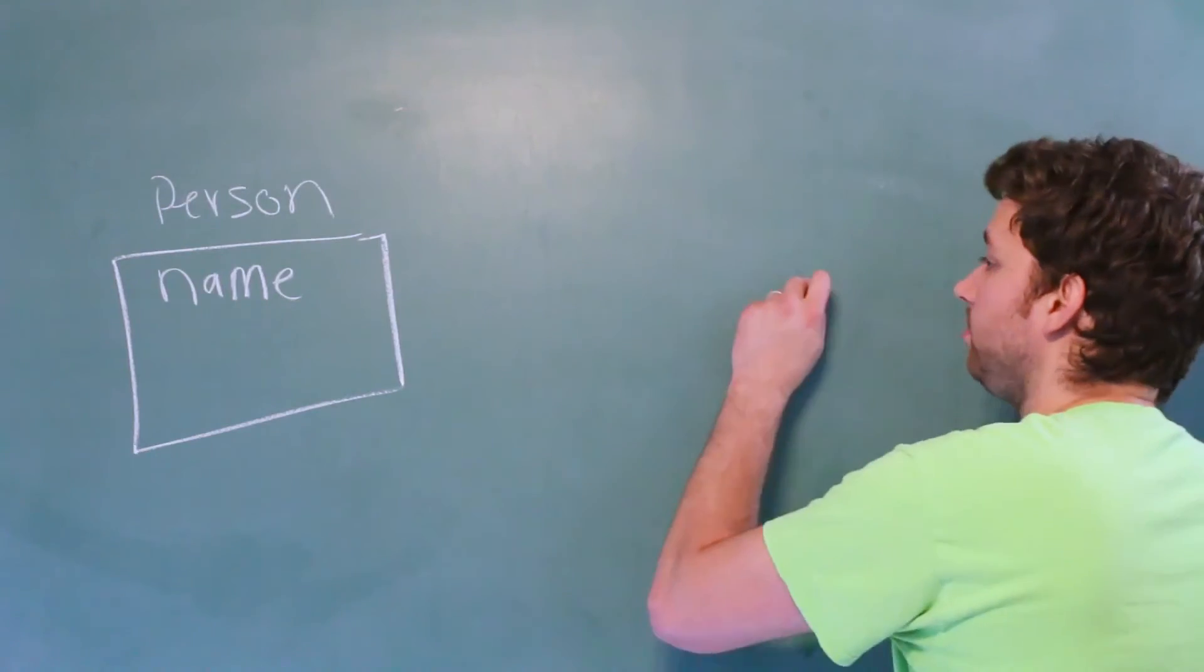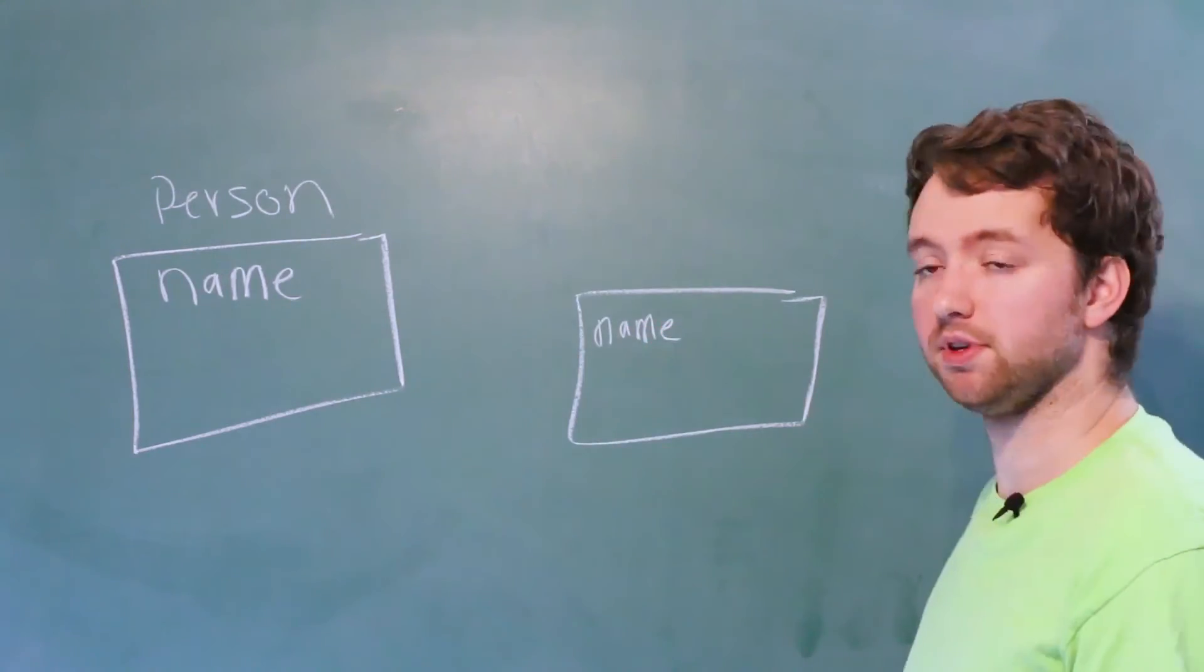When we instantiate it, we're going to have a person and this name field will have some value such as Caleb.